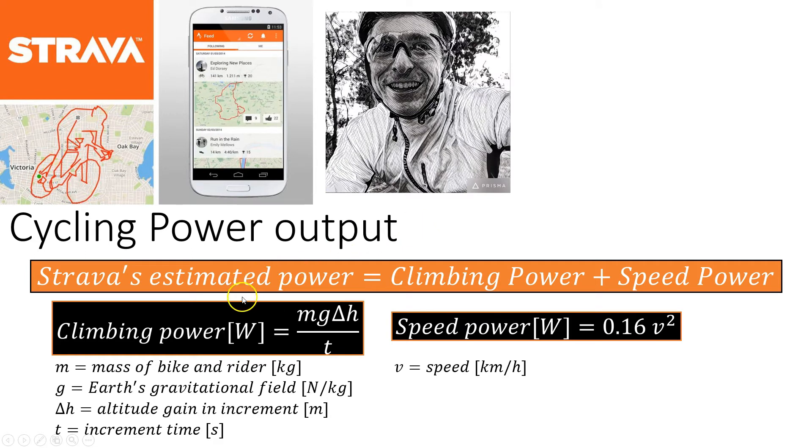In summary Strava estimates your power output without a power meter from a combination of your climbing power and the power of you riding at a speed. Climbing power is mgh over t and speed power seems like Strava calculates from a formula of about 0.16 v squared where v is your speed in kilometers an hour. Hope you enjoyed that little analysis.